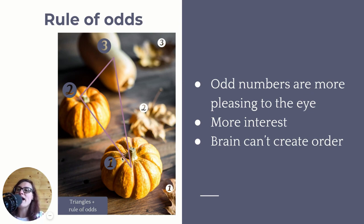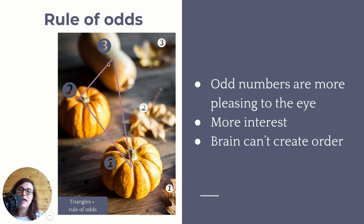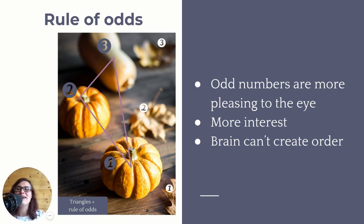Here I used three squashes, three pumpkins, and three beautiful autumn leaves. The pumpkins are placed in a triangle — because you've got odd numbers and three elements, you might as well place them in a triangle.